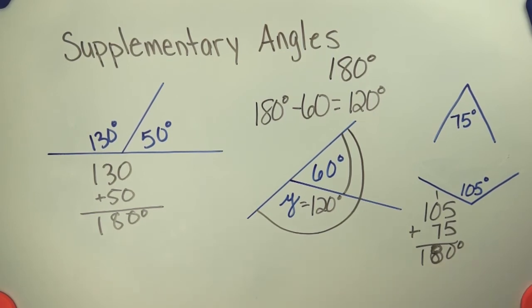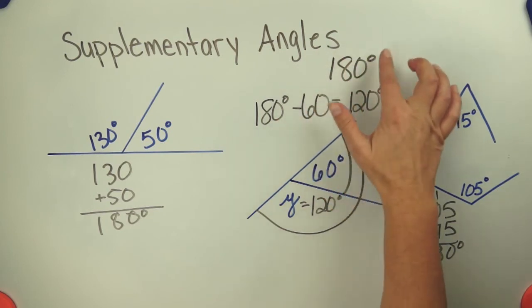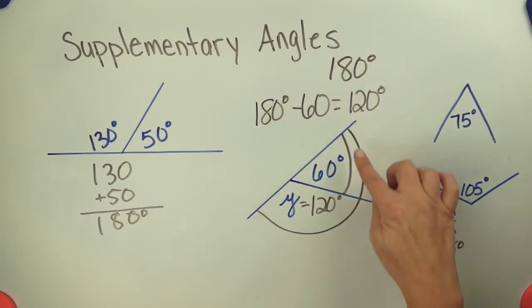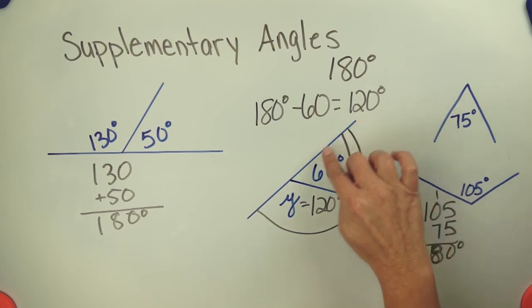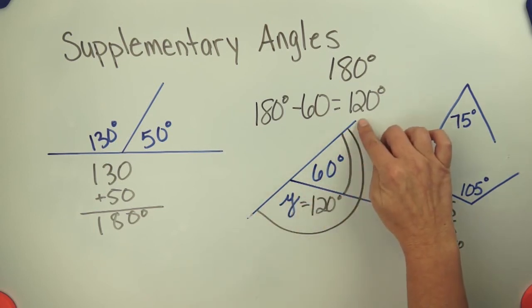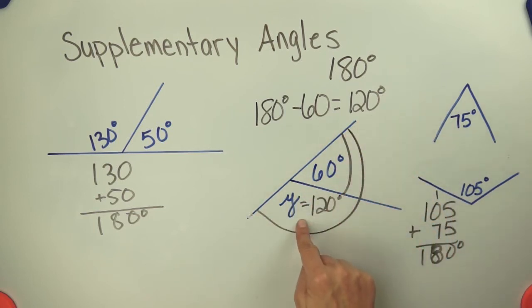So two angles that add to 180 degrees are supplementary and you can use the fact that a straight line is 180 degrees to find a missing angle if you know one of the angles. That's the end of our lesson on supplementary angles.